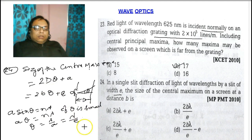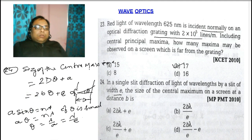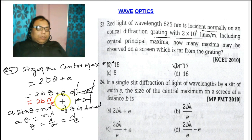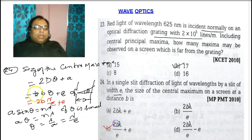Now putting this value into the size formula: 2B·θ = 2B·(λ/E). So the size of central maxima = 2Bλ/E + E. Option C is the correct answer.